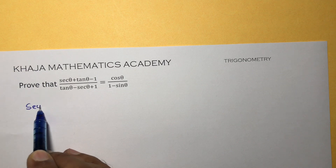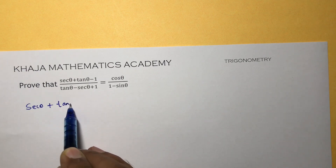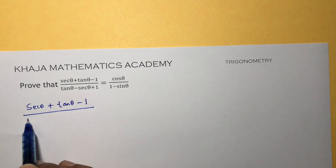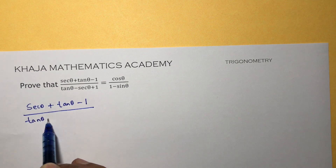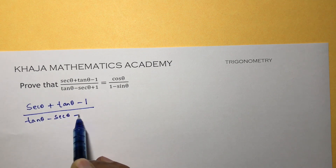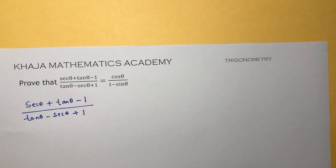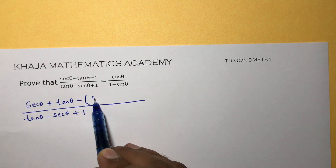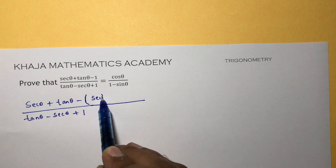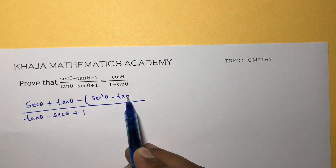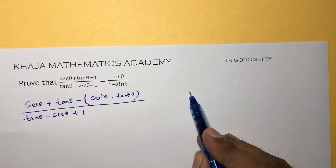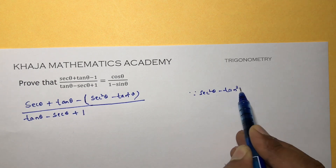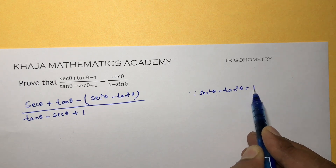LHS: (sec θ + tan θ - 1) / (tan θ - sec θ + 1). In the numerator, in place of 1, you can write sec²θ - tan²θ, because sec²θ - tan²θ = 1 is an identity.